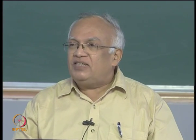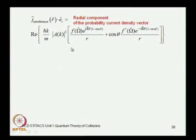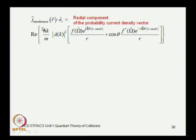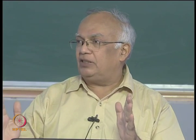Greetings. We will continue our discussion on the optical theorem and establish it today. Toward that, we considered the probability current density vector, which was made up of three terms: the incoming wave, the scattered outgoing wave, and the interference term.